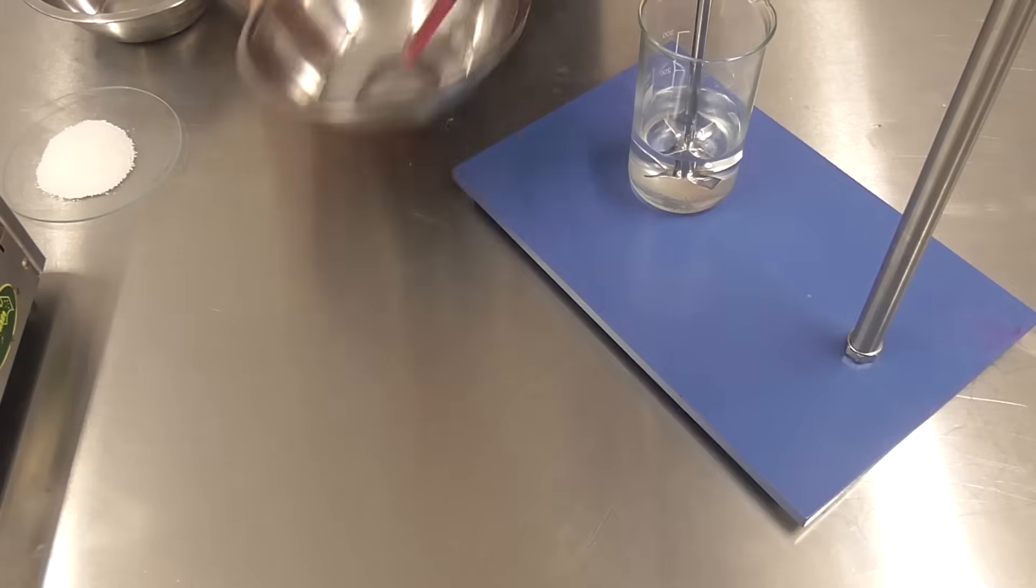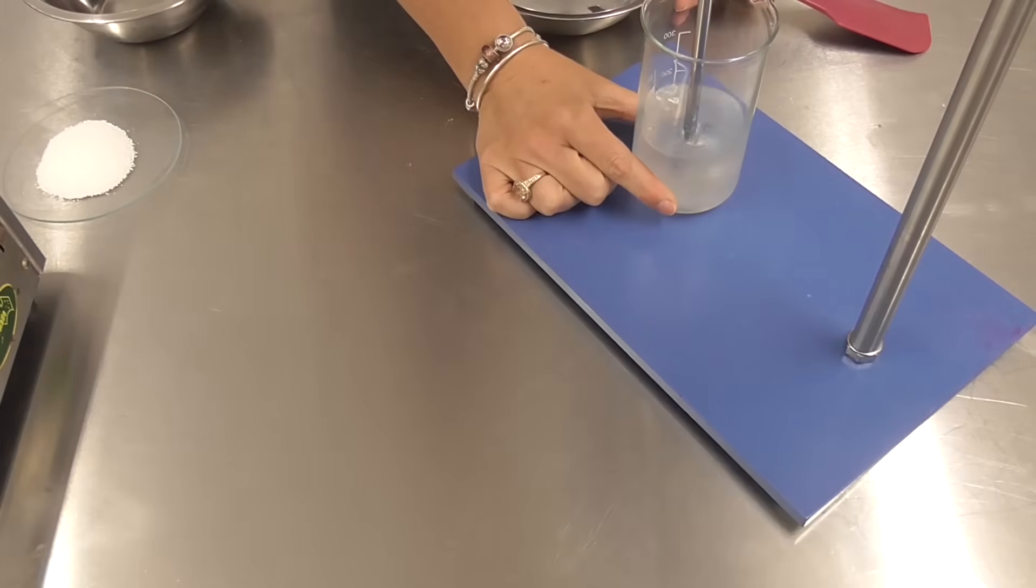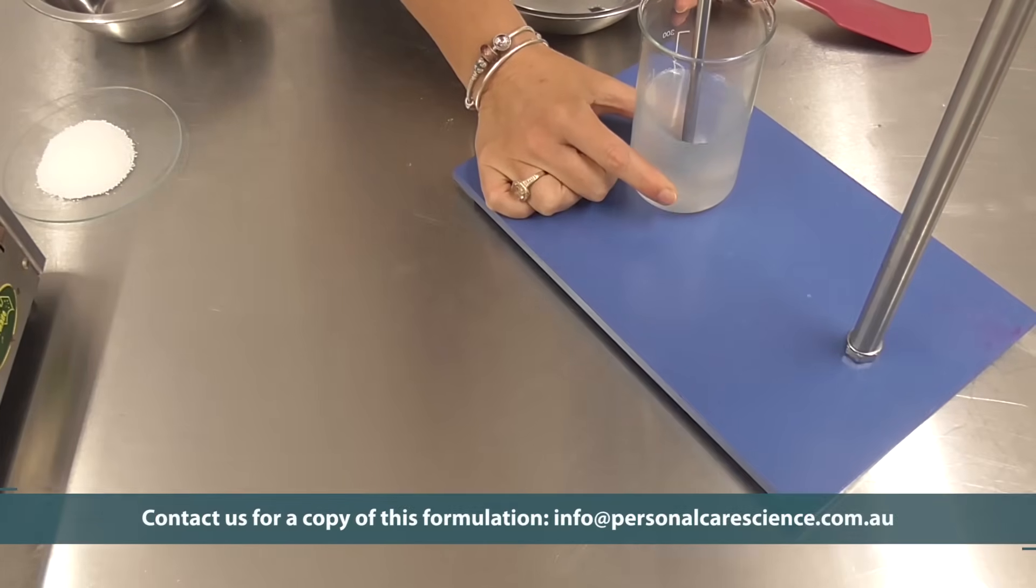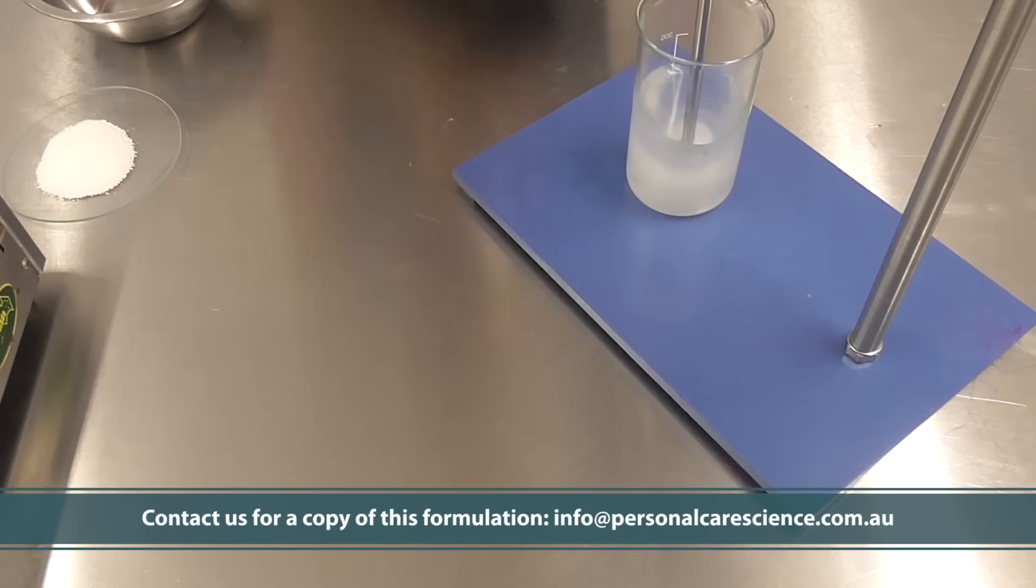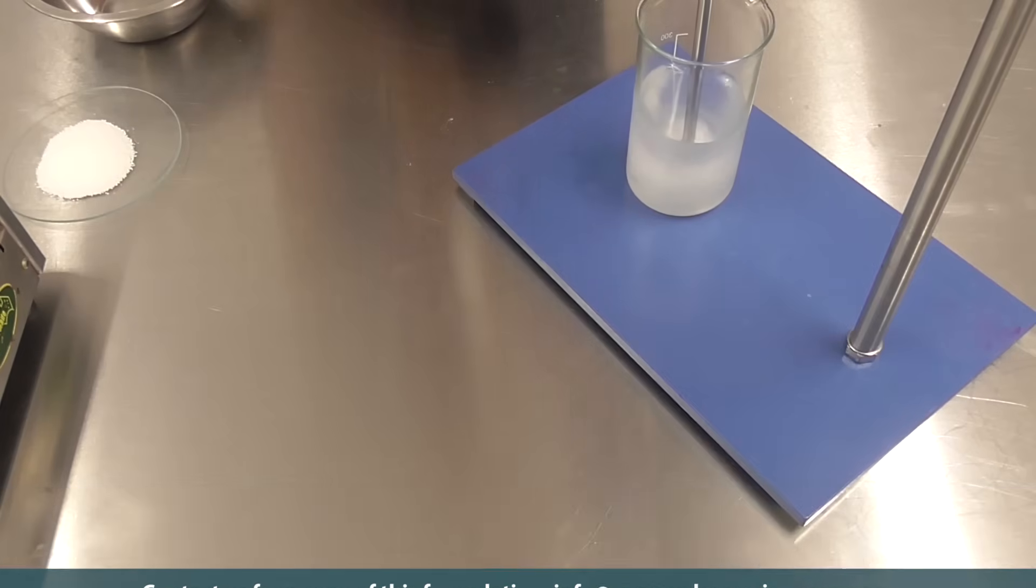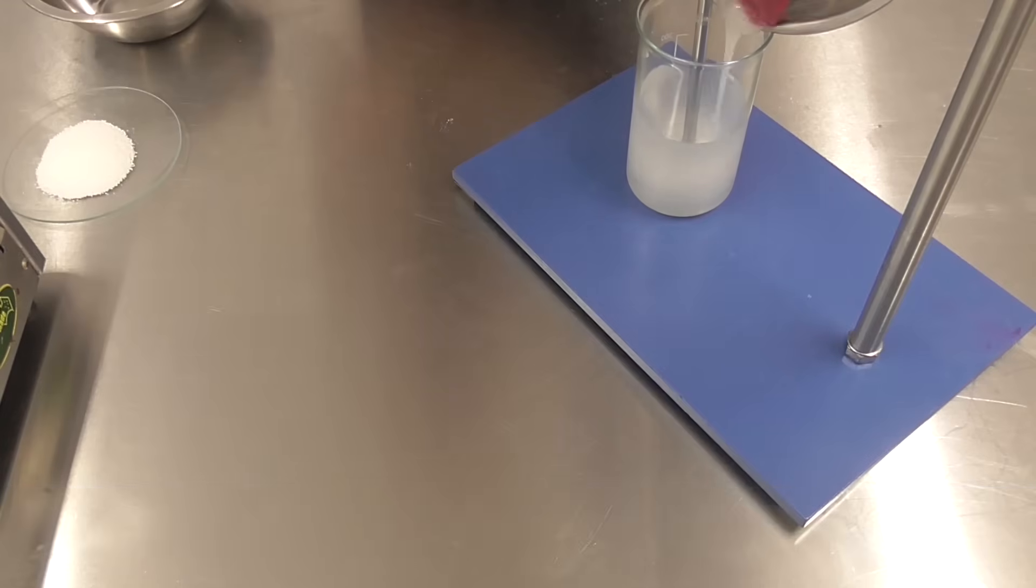Now here I have already combined my water and my planta care 810, and I'm going to add my xanthan slurry to this because I need the xanthan gum to hydrate in all available water. This is a really important step. You must add in this order otherwise you can end up with a gummy gel layer later.